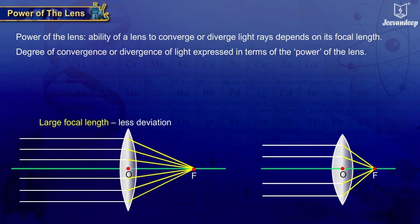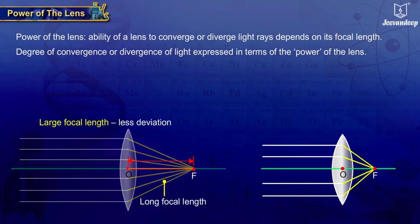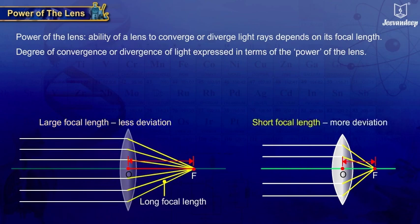A lens having a large focal length deviates the rays less, while a lens having a short focal length deviates the rays more.